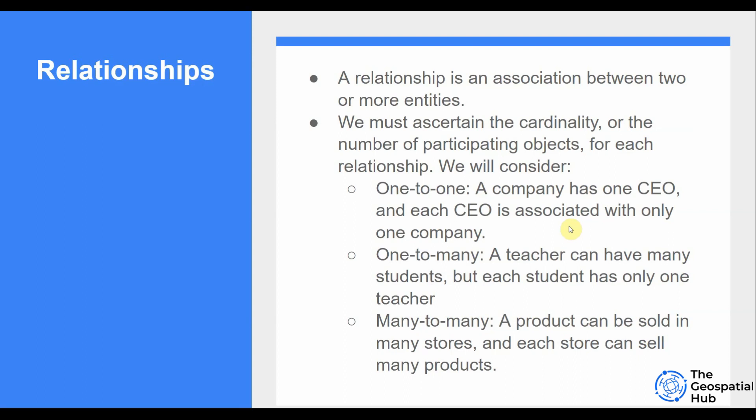For one-to-many, we have the example where a teacher can have many students — one teacher to many students — but each student has only one teacher. And for many-to-many, consider a product that can be sold in many stores, and each store can sell many products. So it's a relationship where the cardinality between the entities is many-to-many.